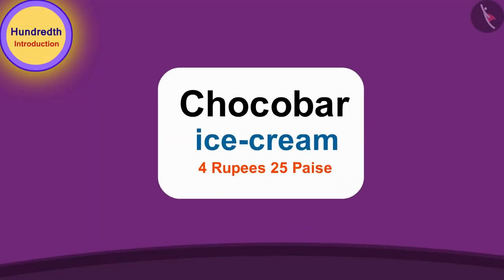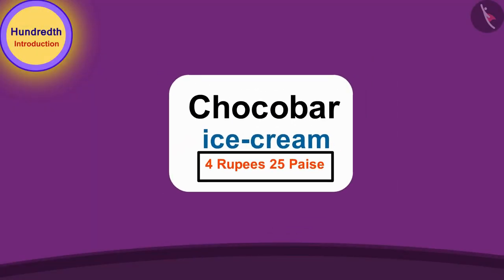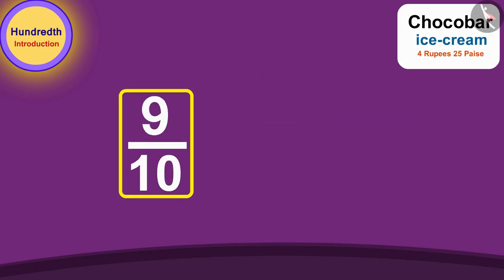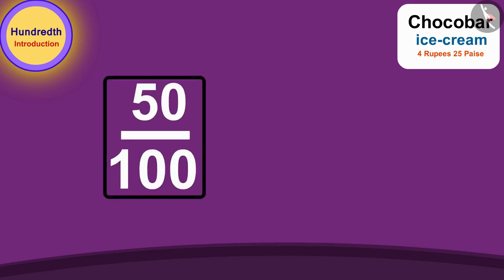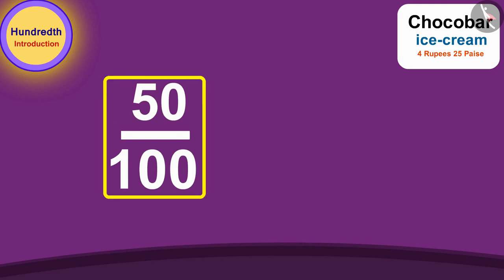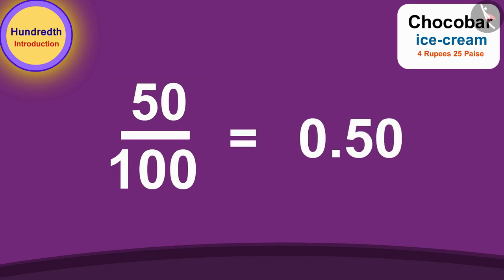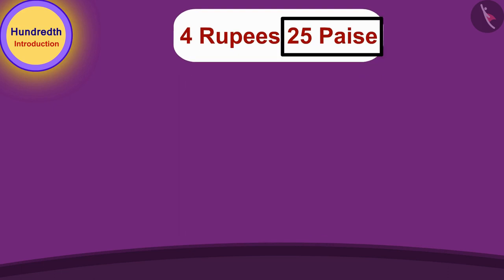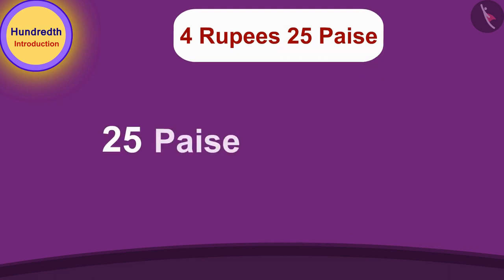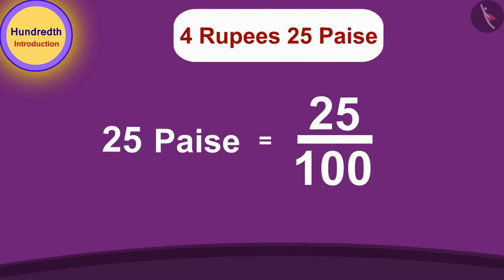Chocobar ice cream costs 4 rupees and 25 paise. Just as we write one tenth of any number using a decimal point, in the same way we can write one hundredth of any number using a decimal point. Here, 25 paise is 25 hundredth part of a rupee.